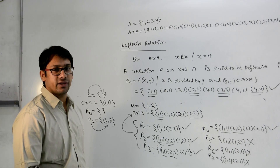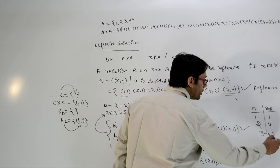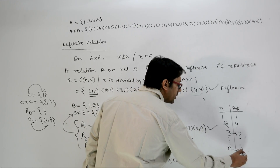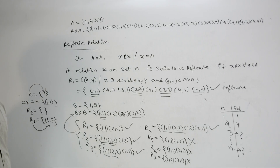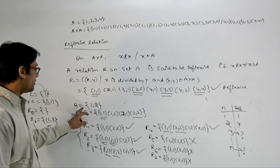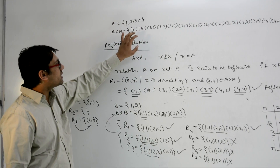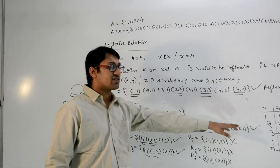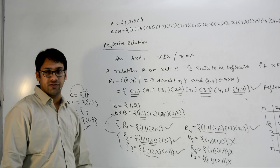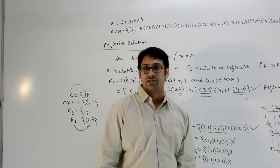Relations like R5 = {(1,1), (1,2)} are not reflexive because they don't contain (2,2). Similarly R6 = {(1,1), (2,1)} and R7 = {(2,2), (2,1)} are not reflexive. Every reflexive relation must contain xRx for all x belonging to the set. So for set B with 2 elements, there are 4 reflexive relations. If a set has 1 element, there is only 1 reflexive relation. The question is: for a set with N elements, how many reflexive relations are there?